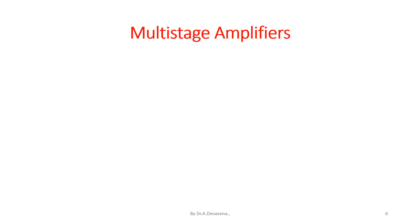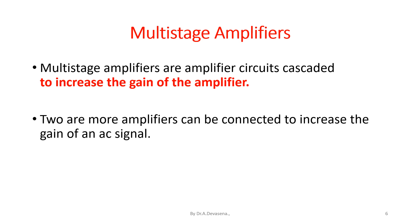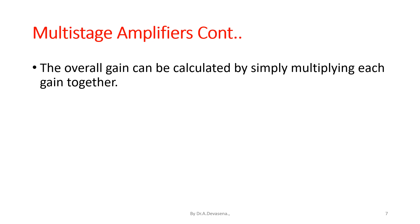Multi-stage amplifiers are amplifier circuits cascaded to increase the gain of the amplifier. Two or more amplifiers can be connected to increase the gain of an AC signal. The overall gain can be calculated by simply multiplying each gain together: AV' is equal to AV1 into AV2 into AV3, and so on.